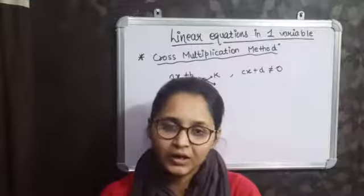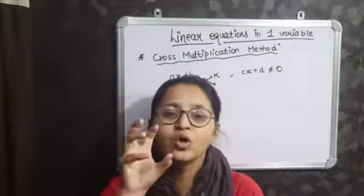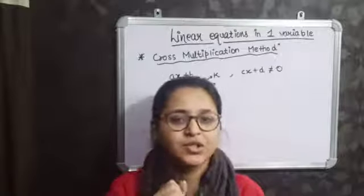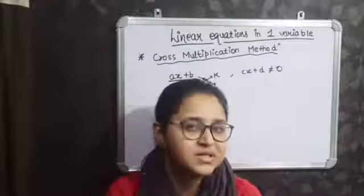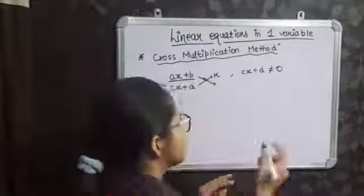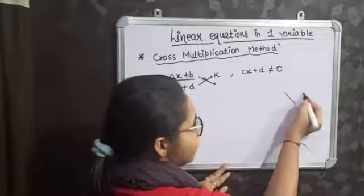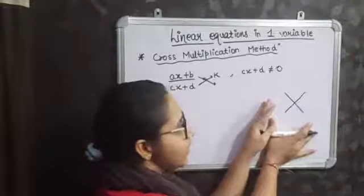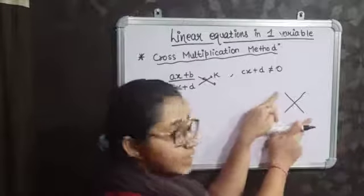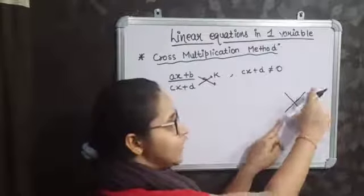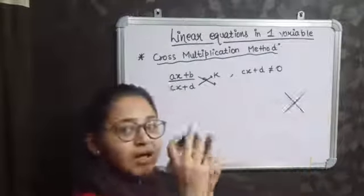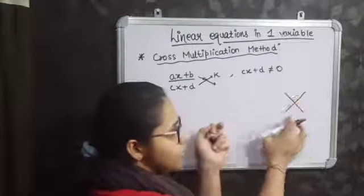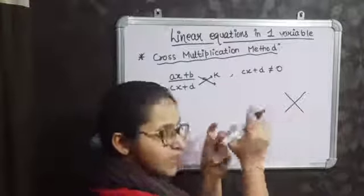Now there is another rule and that rule is cross multiplication method. Cross multiplication — the name itself suggests the symbol for cross. Cross multiplying means you are multiplying these two terms and you are multiplying these two terms. From the name itself we can conclude that you are cross multiplying the terms in the same manner.